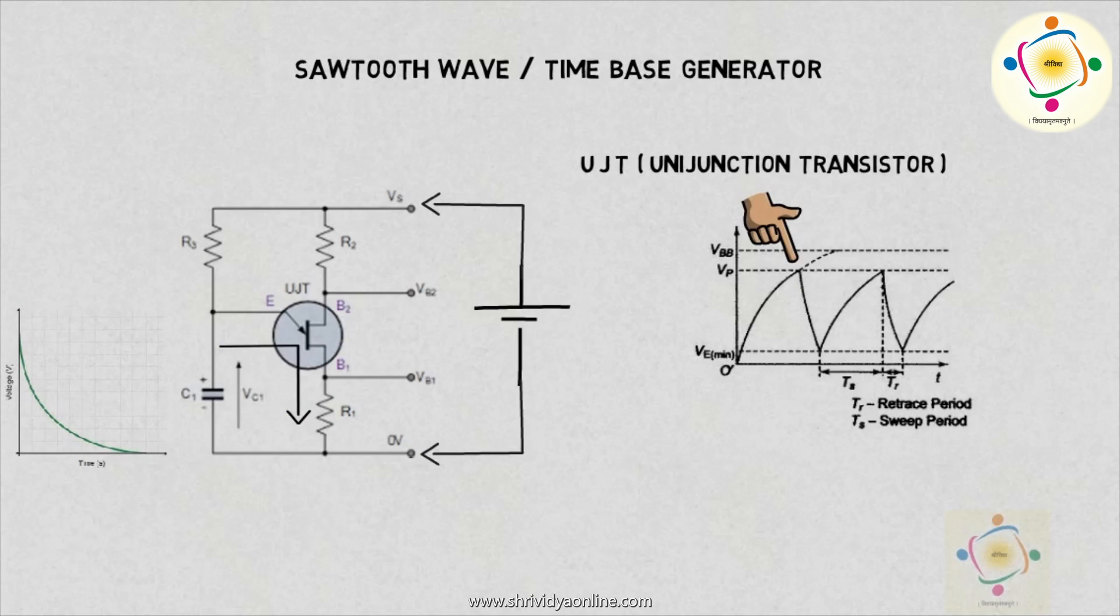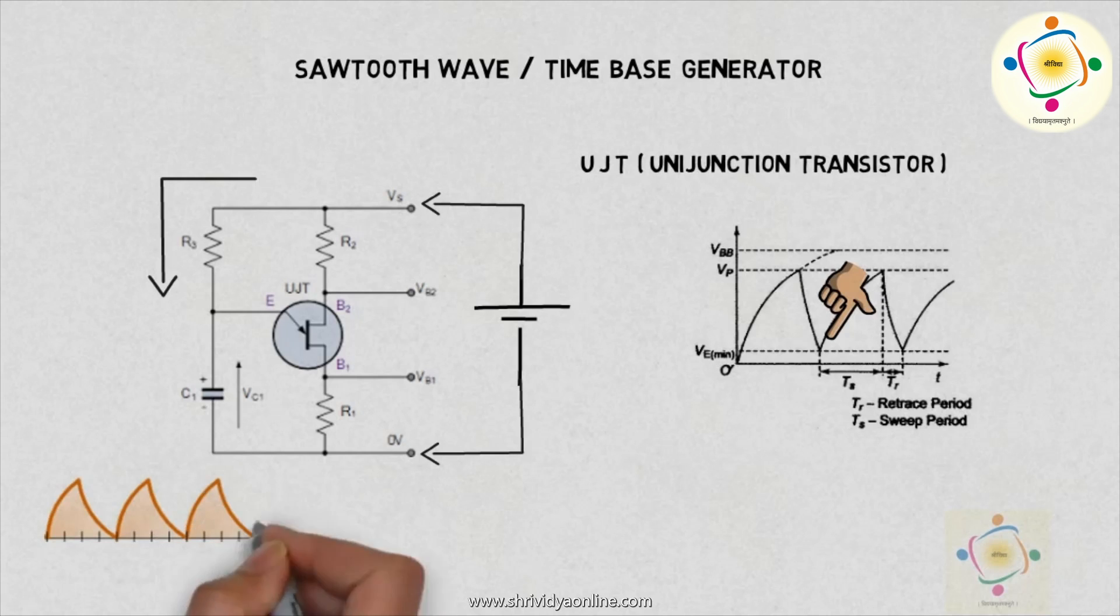When the voltage on emitter becomes VE minimum, the junction becomes reverse biased and does not allow current to pass. Again the capacitor starts charging through resistor R and the cycle repeats. The output across capacitor is the sawtooth waveform.